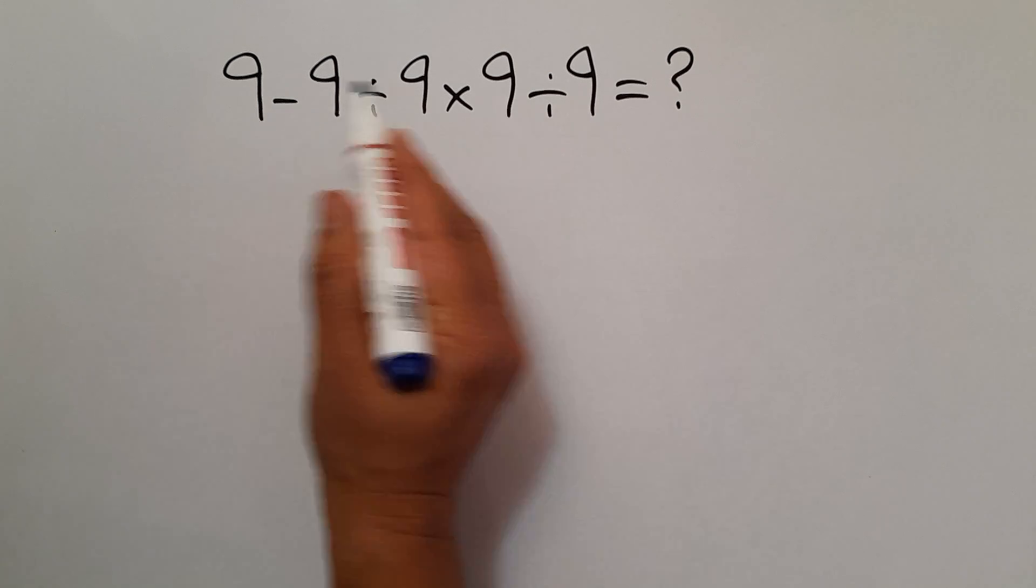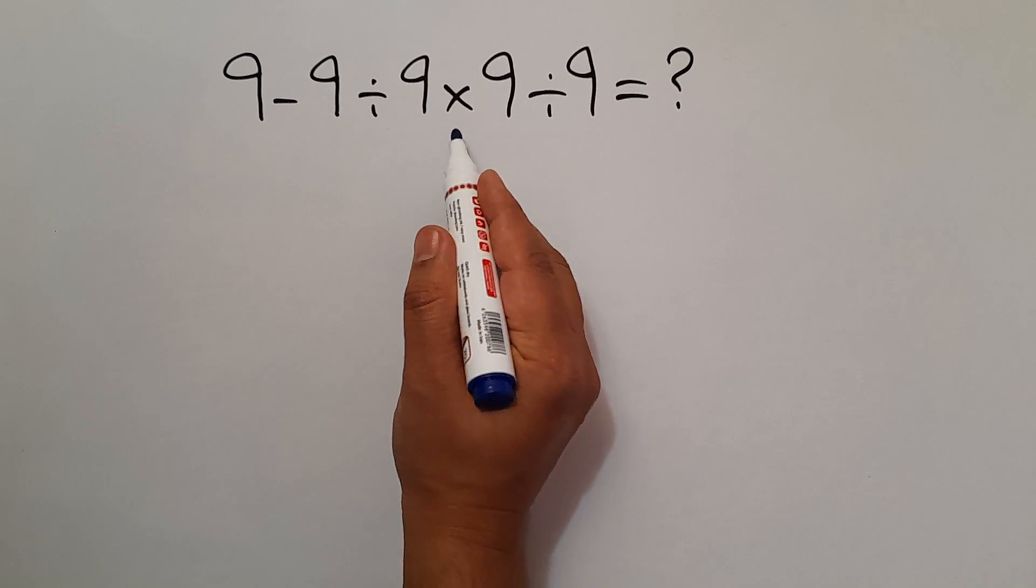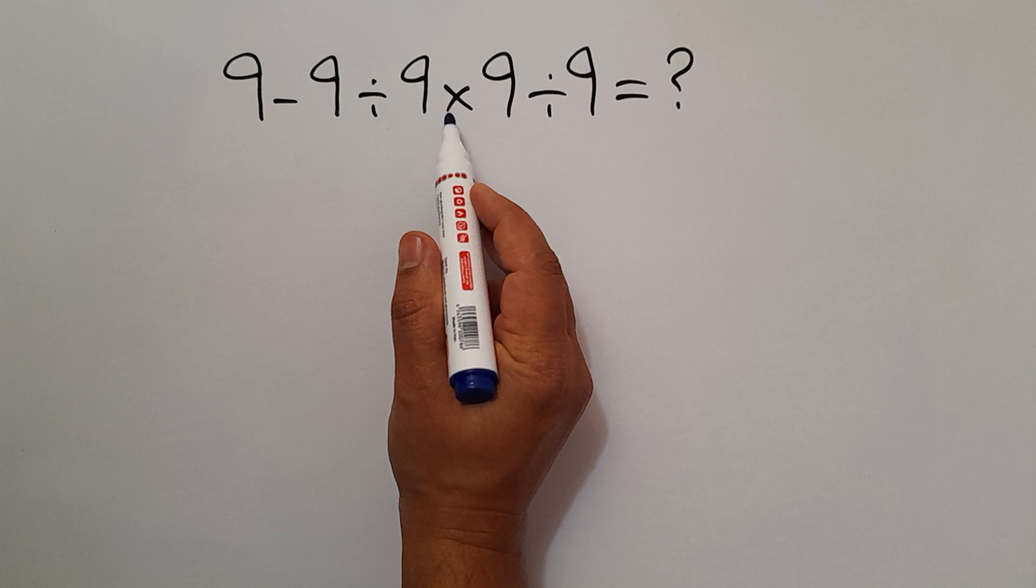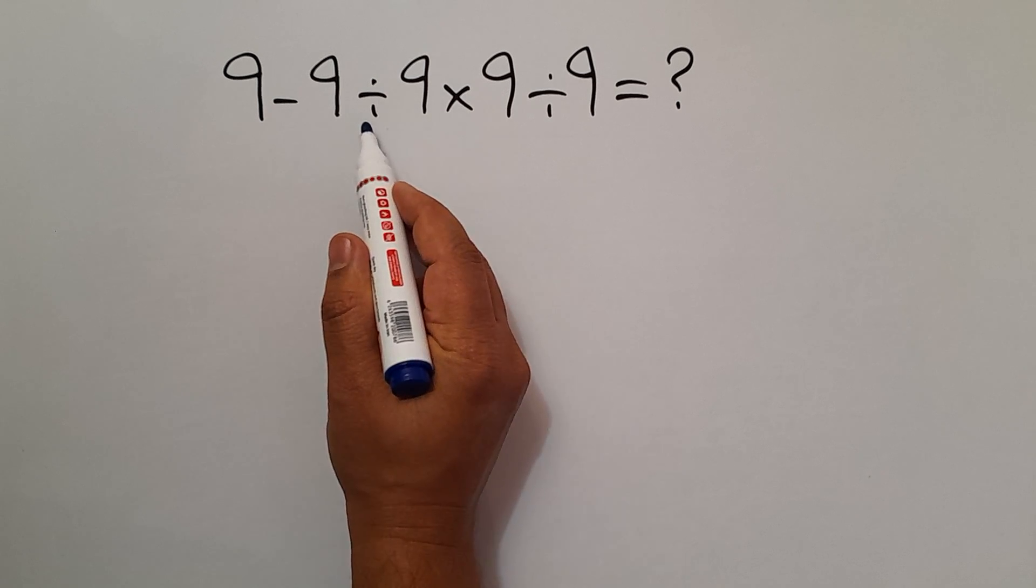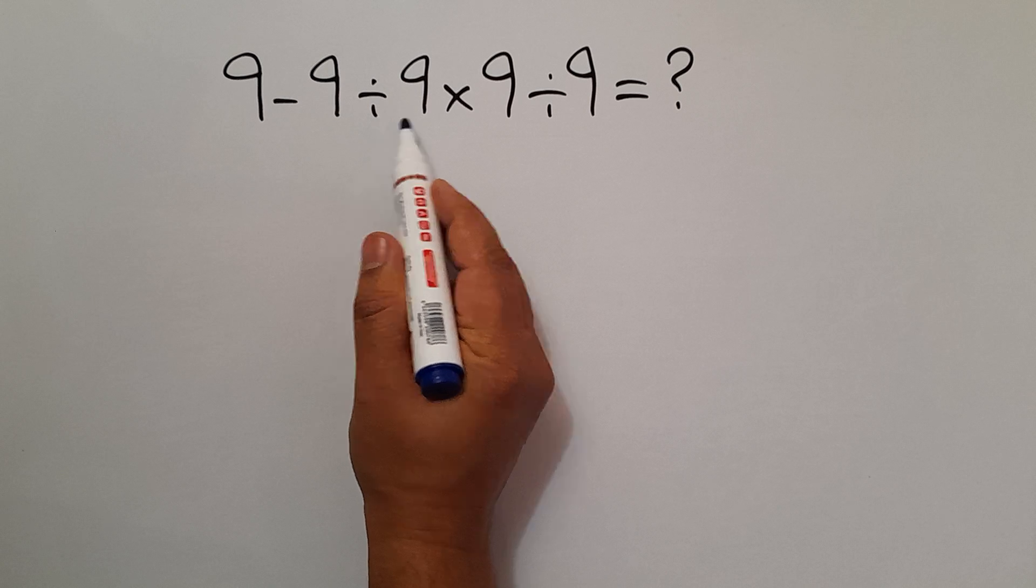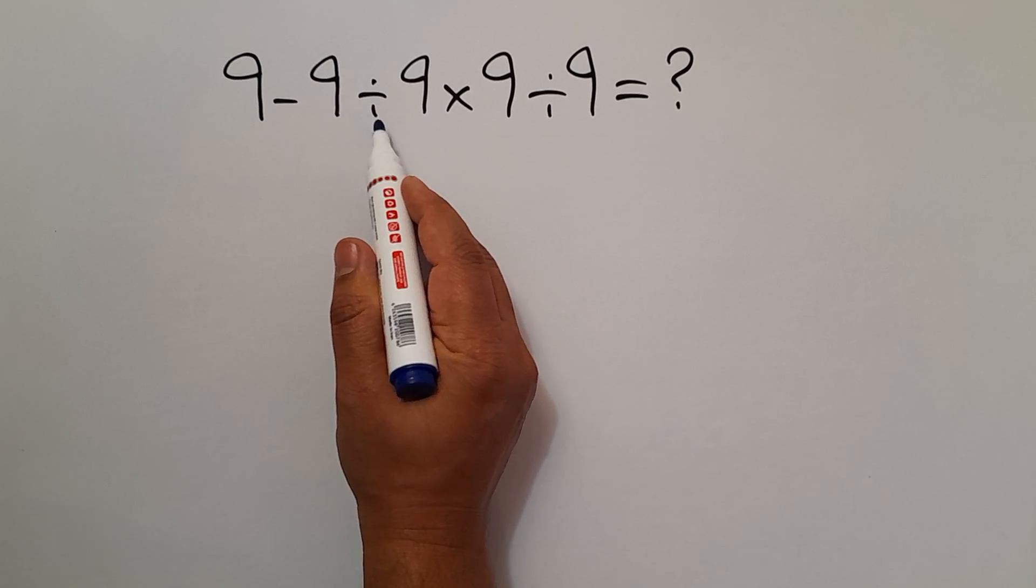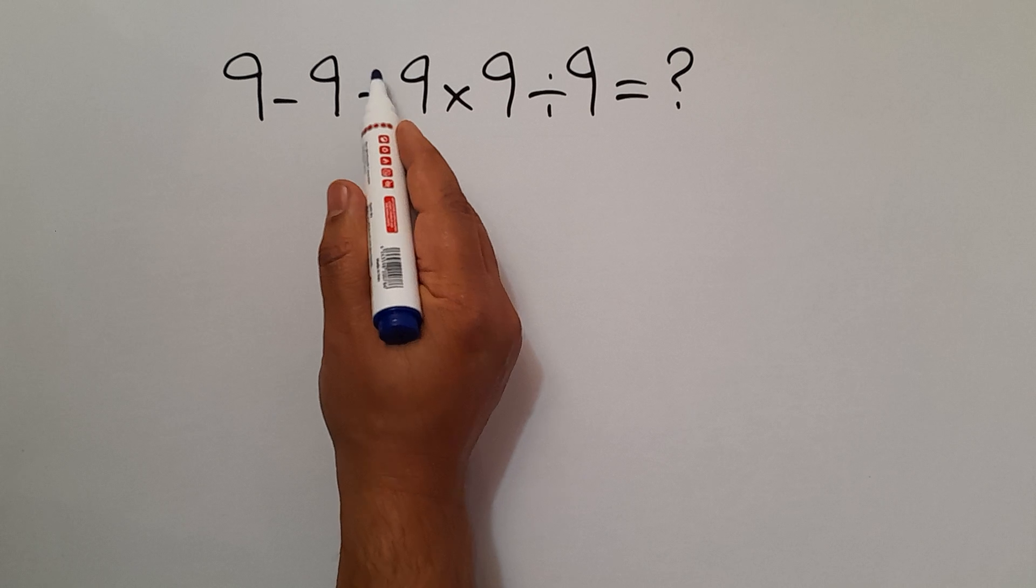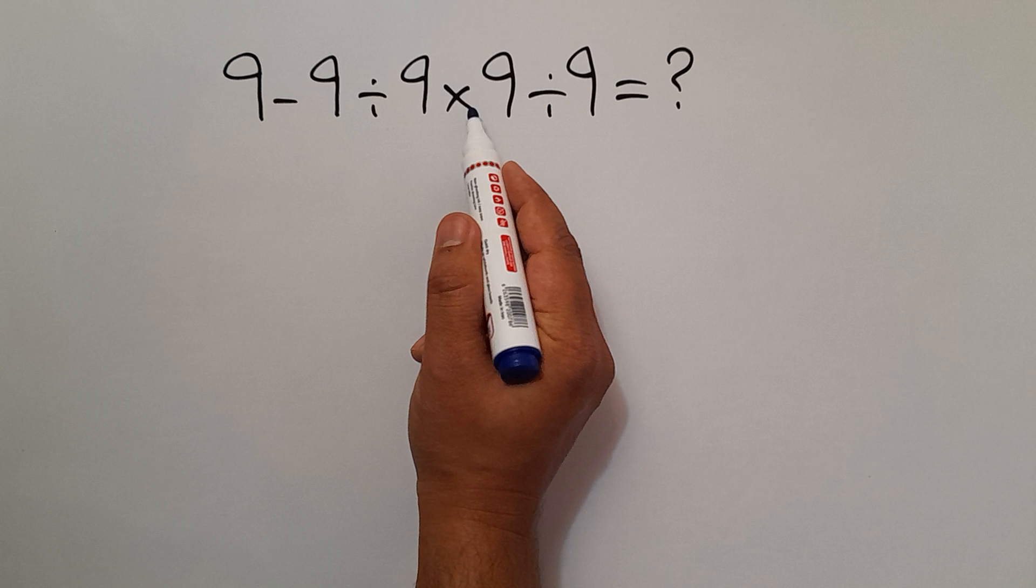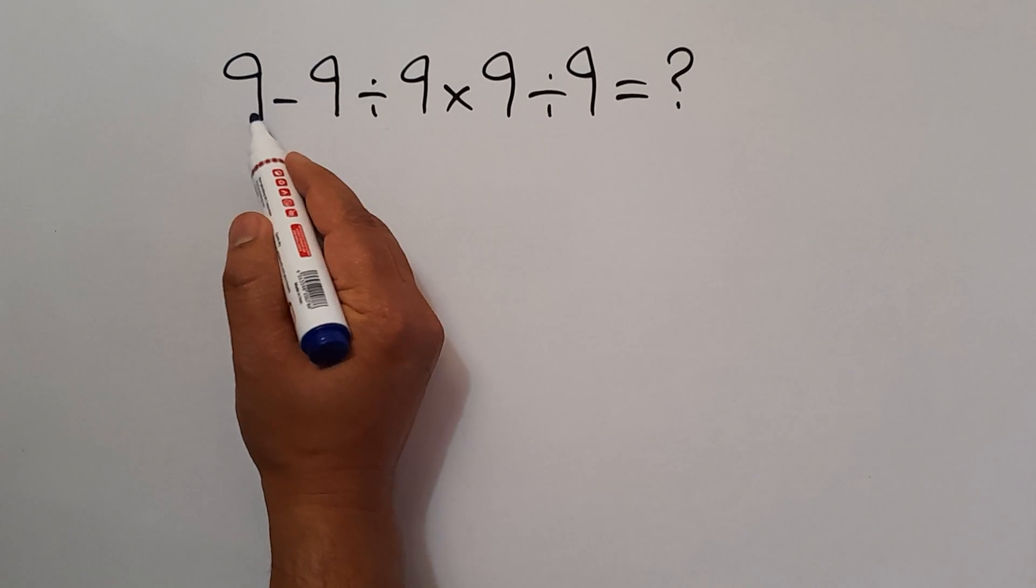In this expression we have one subtraction, two divisions, and one multiplication. As we know, according to the order of operations, multiplication and division have higher priority than subtraction. Also, multiplication and division have equal priority and we have to work from left to right. So first, this division, then this multiplication, then this division, and finally this subtraction.